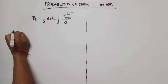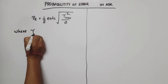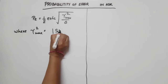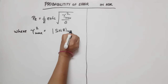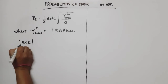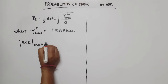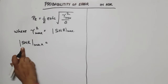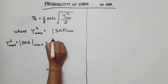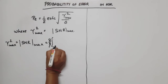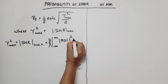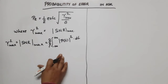Here, gamma-max squared is equal to SNR-max — the maximum signal-to-noise ratio. This is given by gamma-max squared equals 2 divided by eta, integrated from minus infinity to infinity of P(f) squared dot df.